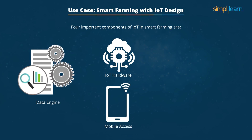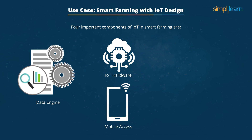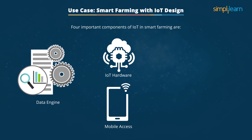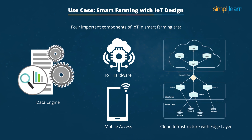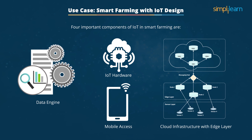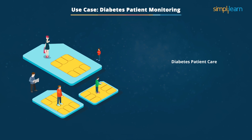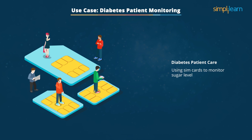Hardware with self-fixing algorithms is even better. The third aspect is mobile access, possible using a smartphone along with offline or online mobile applications. To enable all three processes, you need cloud infrastructure with the edge layer. This IoT system can enable smart farming for any crops in any geographical location.